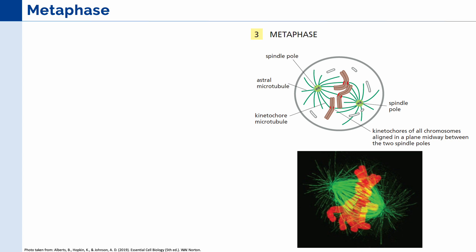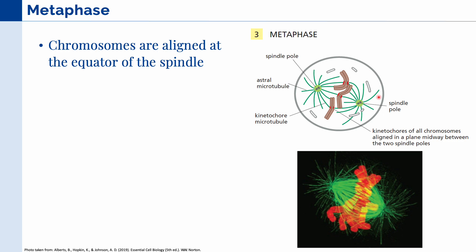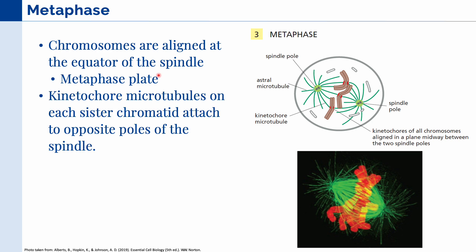As the chromosomes move around the cell, the cell enters the metaphase. The chromosomes keep on moving until they become aligned at the equator of the spindle. We call this structure the metaphase plate. At the same time, the kinetochore microtubules on each sister chromatid attach firmly to the opposite poles of the spindle.